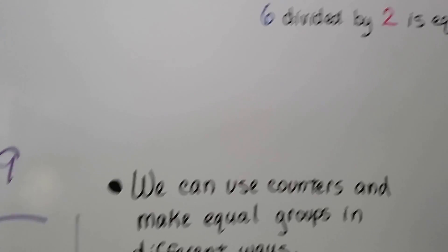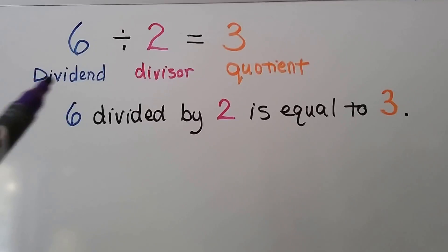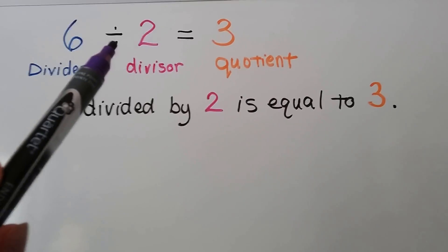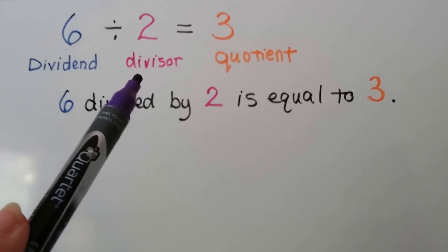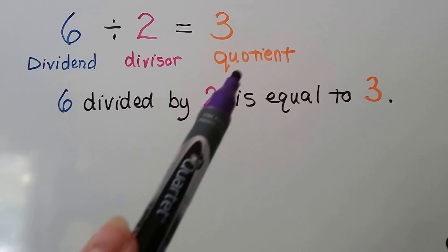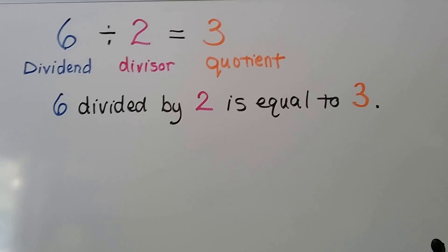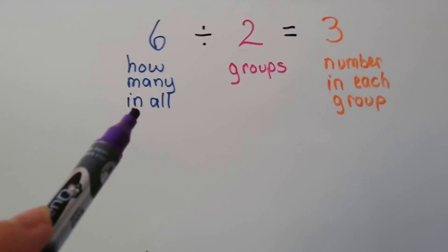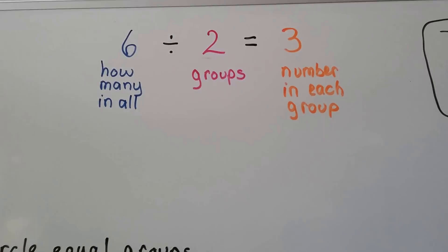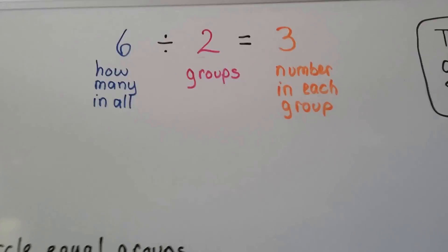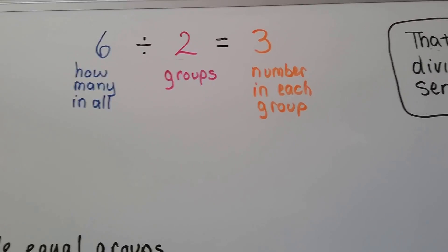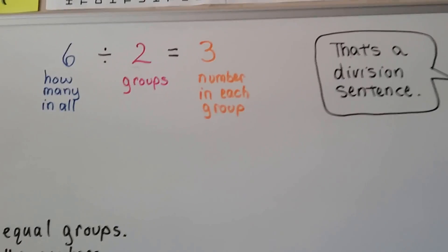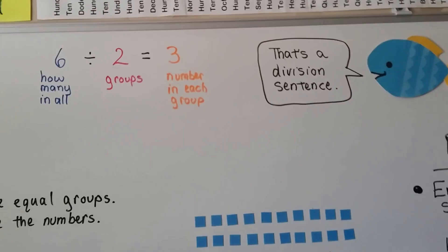Just to review: the first number is called the dividend. This is the division sign, and this is the divisor, and the answer is called the quotient. This is six divided by two is equal to three. What it means is we have six in all, and we're dividing it into two groups, and there's going to be three in each group. And that's a division number sentence.